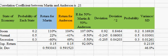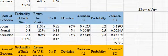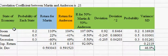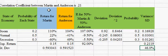This video is going to highlight how you reduce risk by combining two stocks. We have Martin, which was used as an example on the previous page of the same spreadsheet, and that information is now transferred over here. We have the different probabilities of the economy and the return. And then we have another company now, Anderson. It's been established that the correlation coefficient between the two companies is 0.21.